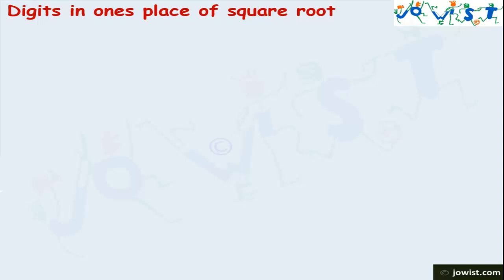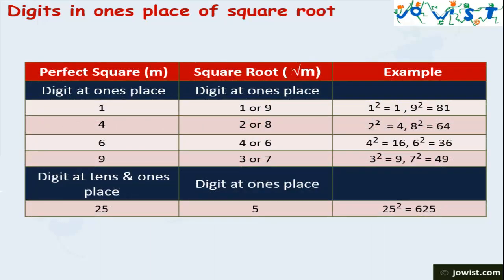Can you guess the digit in the 1's place of the square root of a given perfect square number? I will explain how to find it. Have a look at this chart. A perfect square number having 1 in its 1's place will have 1 or 9 in the 1's place of its square root.